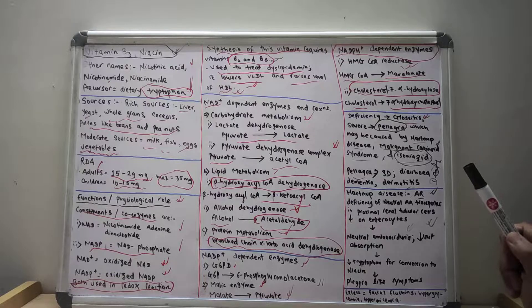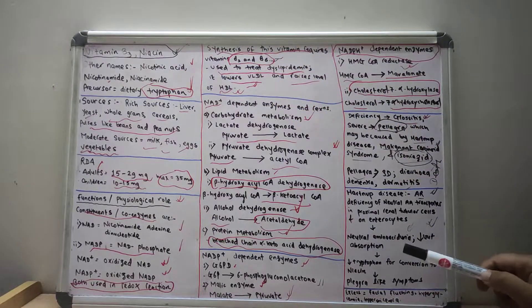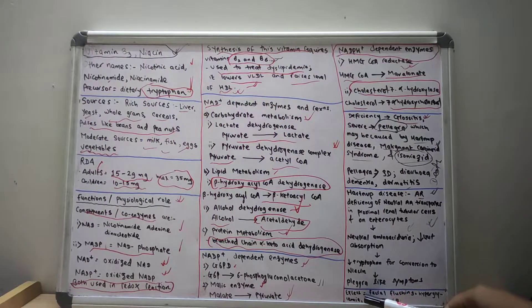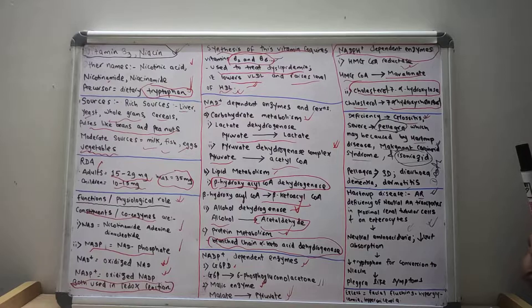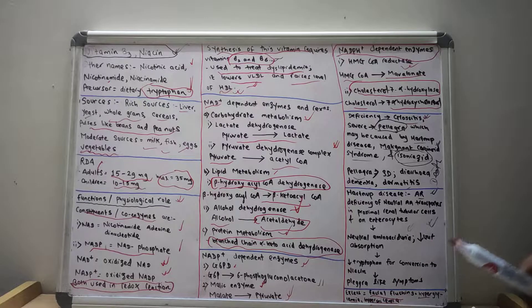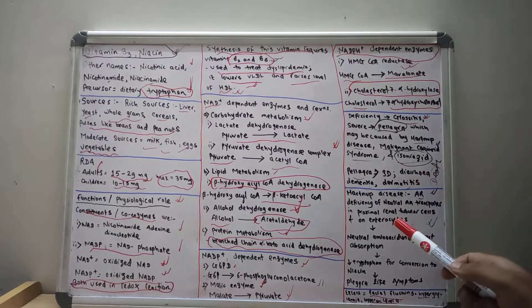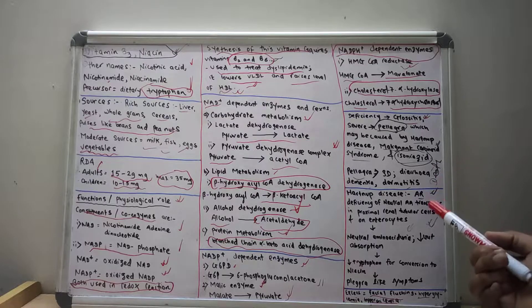Though vitamin B3 is water-soluble, if we take above the maximum dose of 35 mg, there will be excess. Symptoms of vitamin B3 excess include facial flushing, hyperglycemia, and hyperuricemia. The facial flushing is induced by prostaglandins and not histamine, so taking aspirin along with niacin decreases the facial flushing.